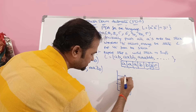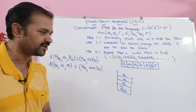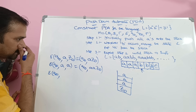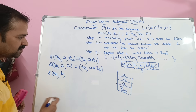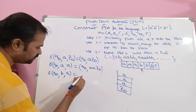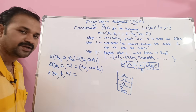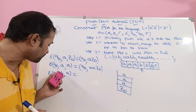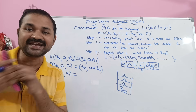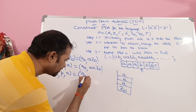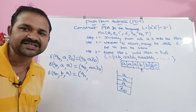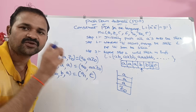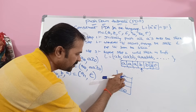So now the stack contains 3 A's and Z0. The next input symbol is B. So delta of q0 comma B comma A. Here the input symbol is B, so we have to perform the pop operation. For the first pop operation, we have to change the state — so now the state becomes q1. So q1 comma epsilon. This epsilon specifies that we are performing a pop operation. So let us pop this A from the stack.